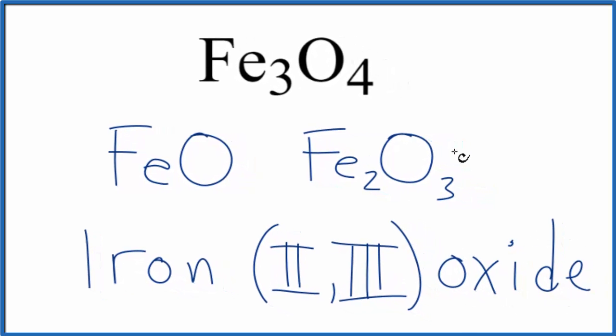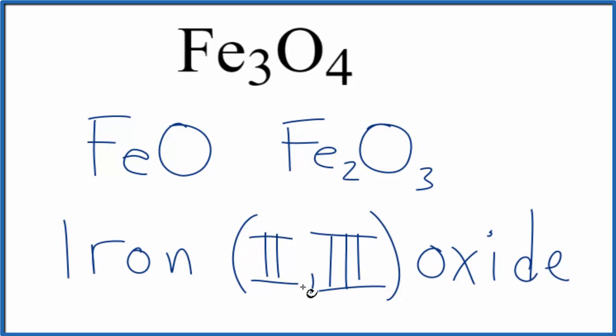So the name for Fe3O4 is iron 2, comma 3 oxide. This one's a bit confusing if you're given Fe3O4. Really what should clue you in that there's a problem is when you get that fractional charge there.